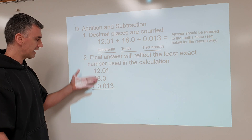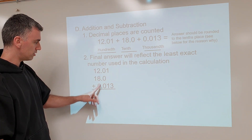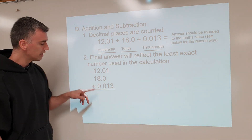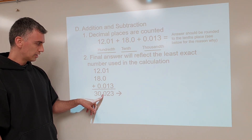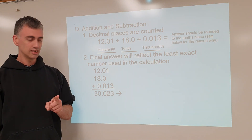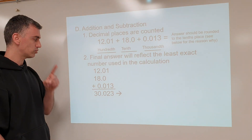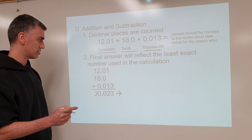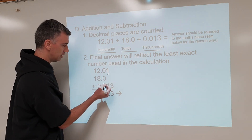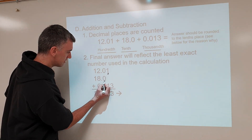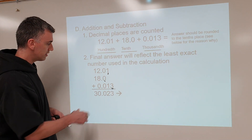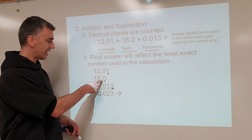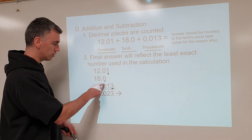Stack the numbers so that all the decimals are in the same place — whole number, tenths, hundredths all directly on top of each other. Put your addition or subtraction sign, write your raw calculator number, and then identify which number is your least accurate. Your least accurate number is determined by finding the last significant figure in each number. Whichever last sig fig is furthest to the left is the least accurate number, and that determines where you round.